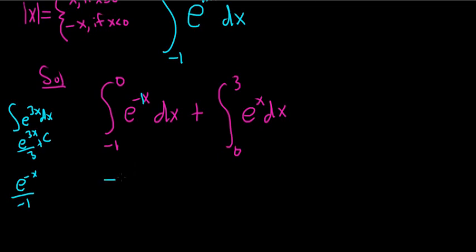That's the same thing as negative e to the negative x, right? Integrals like these you can do in your head if you know this trick. You just divide by the number, and we're going from negative 1 to 0 plus, and then integrating e to the x, that's just e to the x, and we're going from 0 to 3.